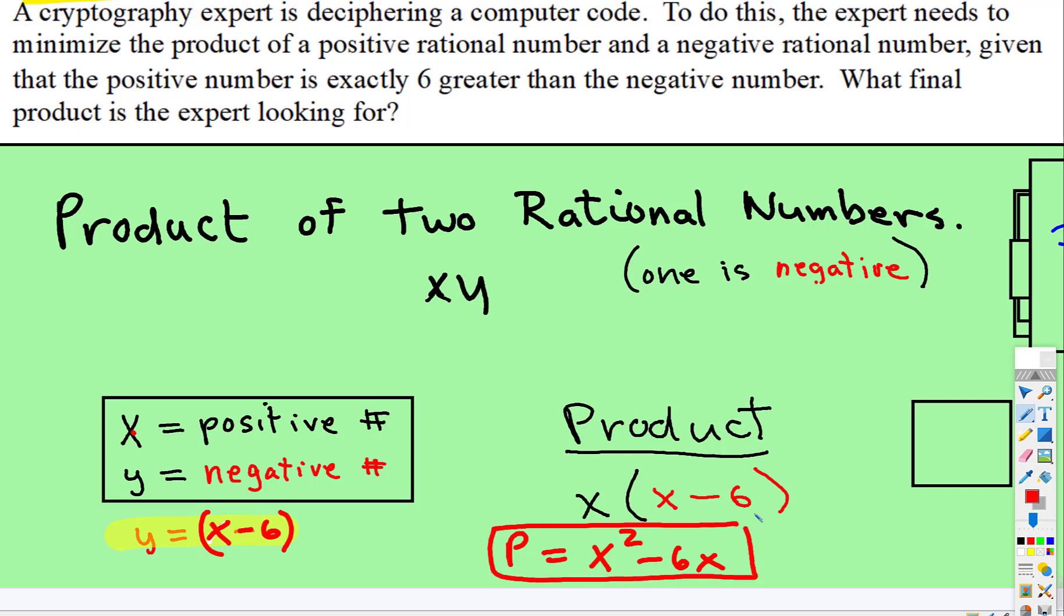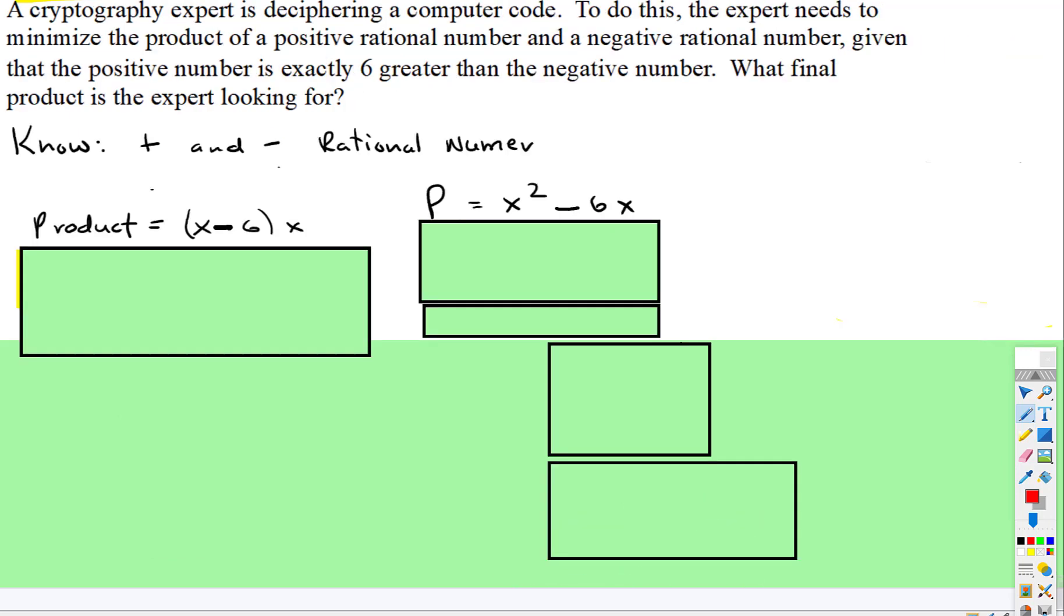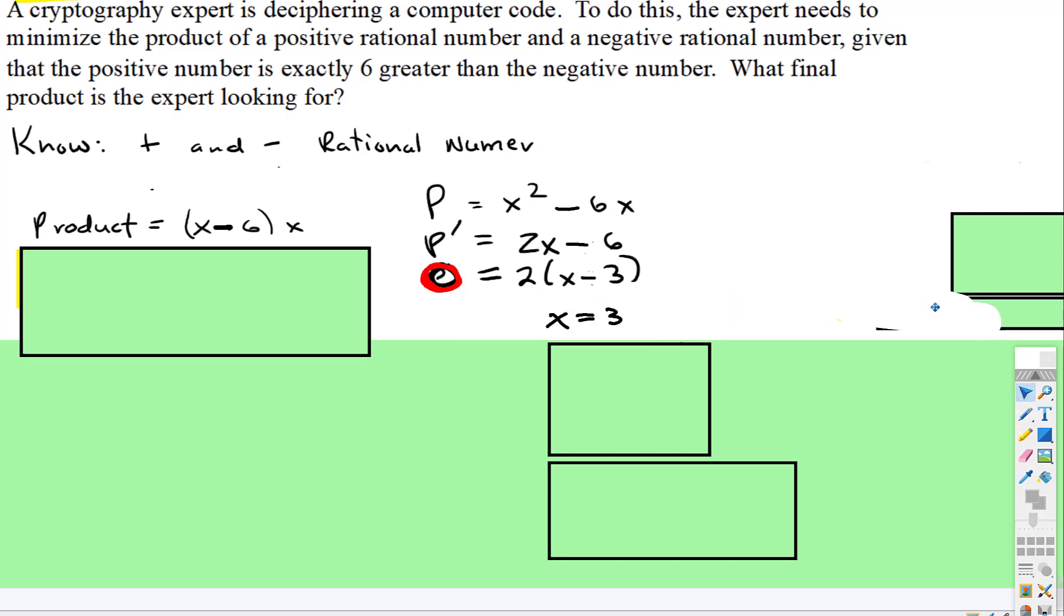So that's what we're going to do over here. We know that we have a positive and negative rational number, and we want to find the product of those two numbers. So here's our product, here's our derivative, and we're going to set the derivative equal to zero. They both have a two in common, we factor out the two. That means x is going to equal three.